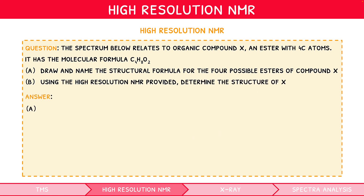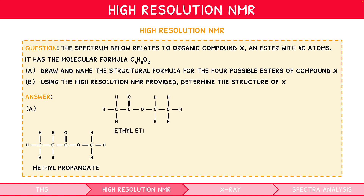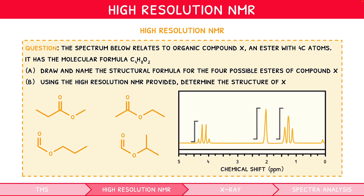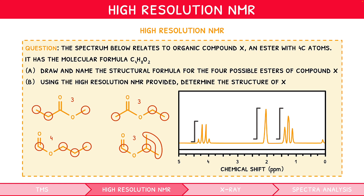For part a, we can use the skills introduced in our IB Chemistry Topic 10 video series to draw the four isomers as methyl propanoate, ethyl ethanoate, propyl methanoate, and 1-methylethyl ethanoate. For part b, we must first identify the number of hydrogen environments in each structure. Methyl propanoate has CH₃, CH₂, CH₃ — i.e. 3 environments. Ethyl ethanoate has CH₃, CH₂, CH₃ — i.e. 3. Propyl methanoate has CH₃, CH₂, CH₂, CH — i.e. 4. And 1-methylethyl ethanoate has two identical CH₃ groups and CH — i.e. 3. Looking at our spectrum, there are three hydrogen environments, so we can exclude propyl methanoate.